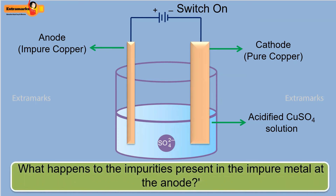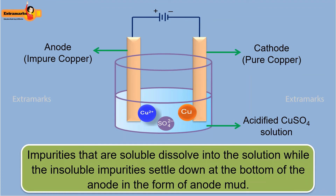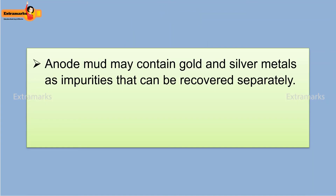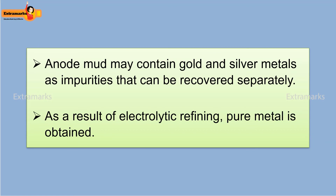The question arises: what happens to the impurities present in the impure metal at the anode? Impurities that are soluble dissolve into the solution, while the insoluble impurities settle down at the bottom of the anode in the form of anode mud. Anode mud may contain gold and silver metal as impurities that can be recovered separately. As a result of electrolytic refining, pure metal is obtained.